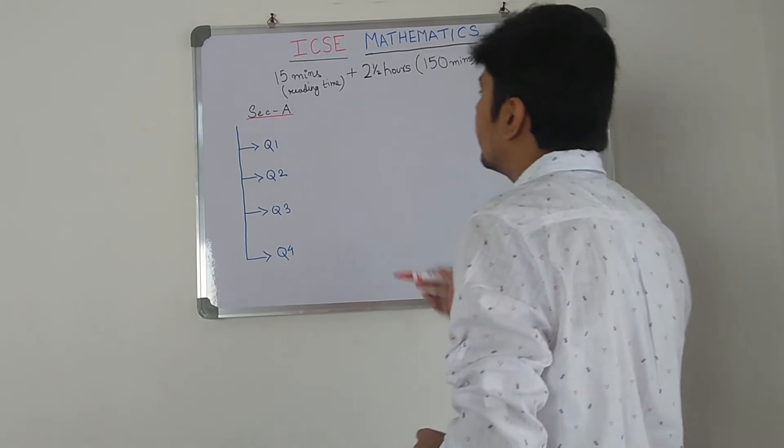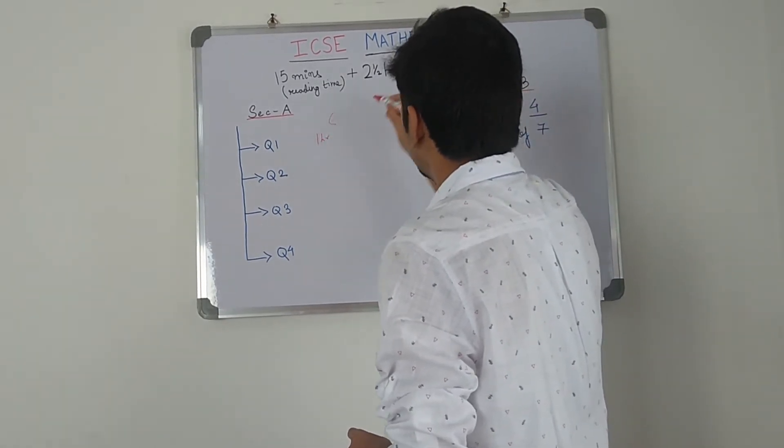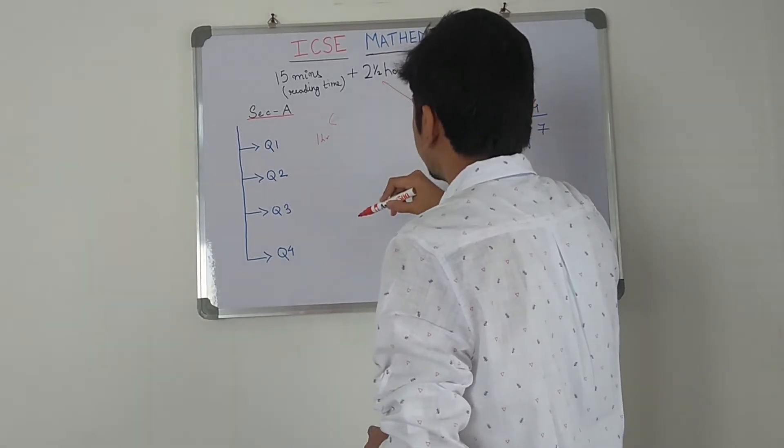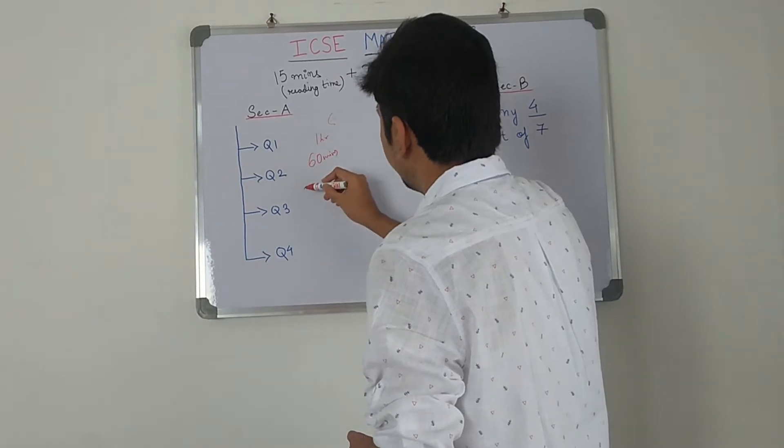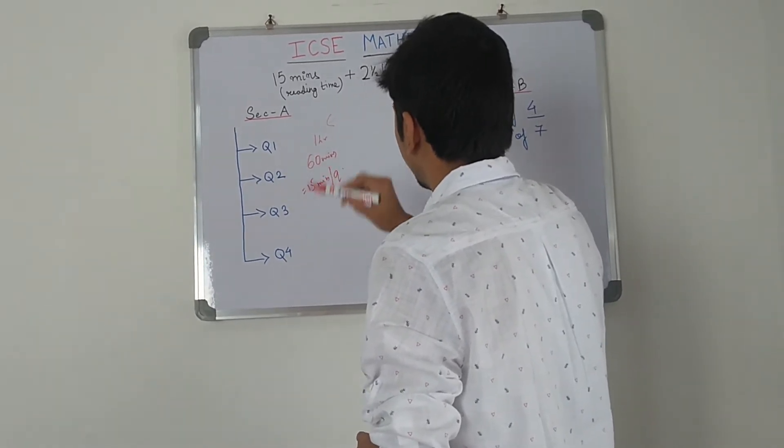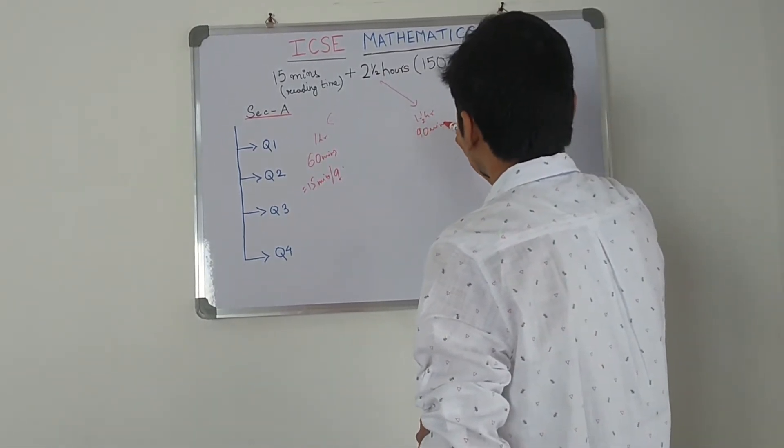Well, if you apply simple unitary method, you can transfer 1 hour over here for section A and 1 and a half hour over here for section B. So 60 minutes, which will be here - 15 minutes per question. Now we have 90 minutes over here.